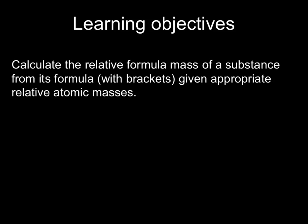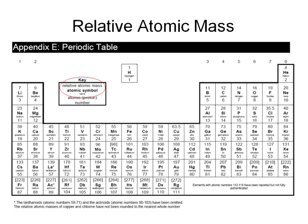In order to do these calculations we have to use the periodic table to find the relative atomic mass of each element, and from the formula of a compound be able to work out the relative formula mass. You're given a periodic table in your exam paper, so you don't have to learn anything, but you do have to know which of the two numbers to use. The relative atomic mass is the top of the two numbers — for boron this would be 11, and in most cases they are whole numbers, rounded to a whole number.